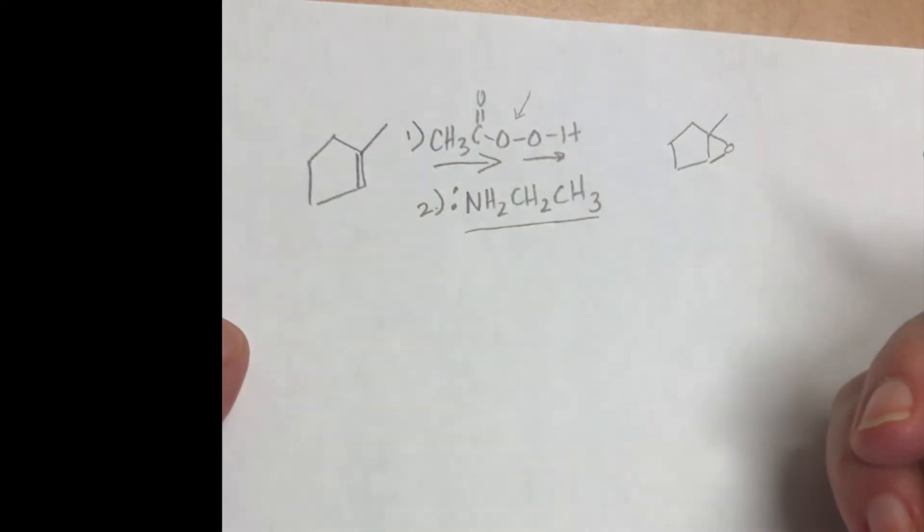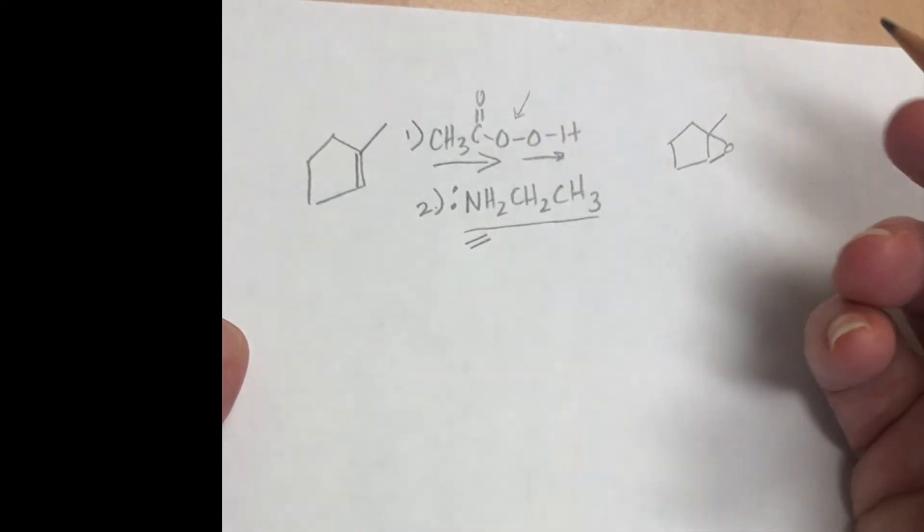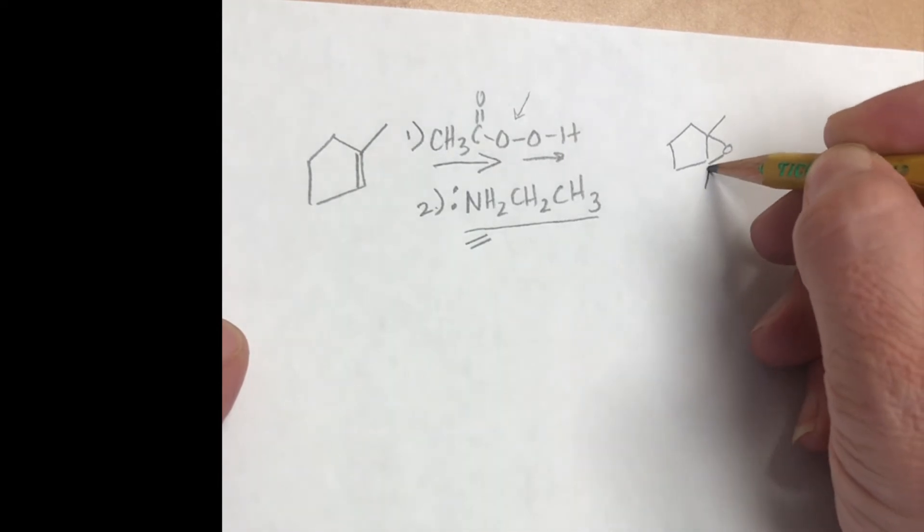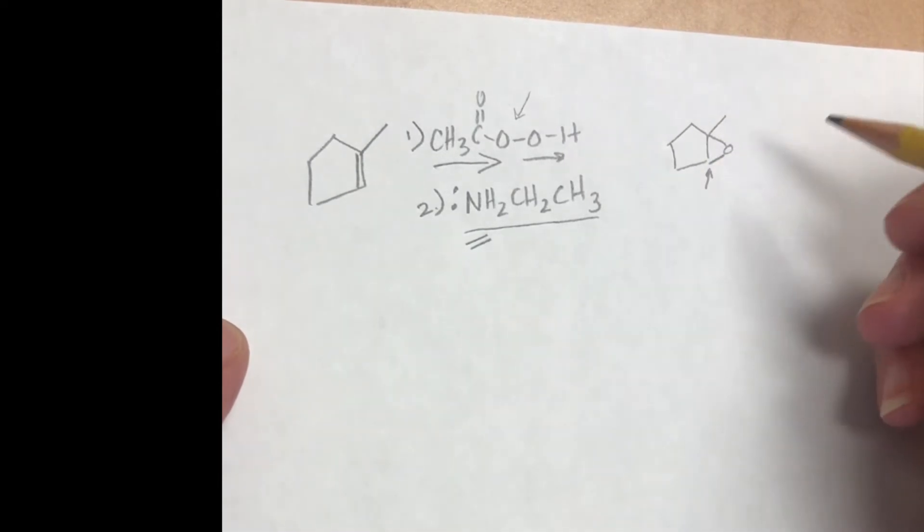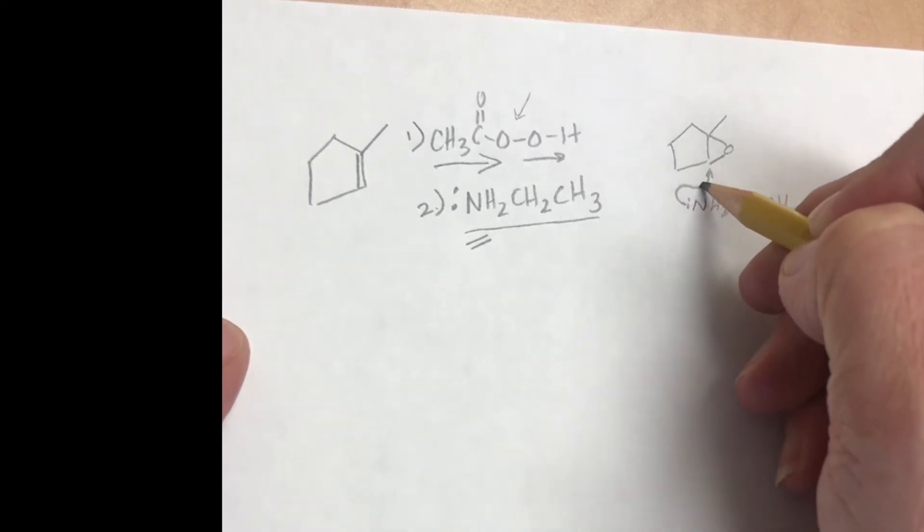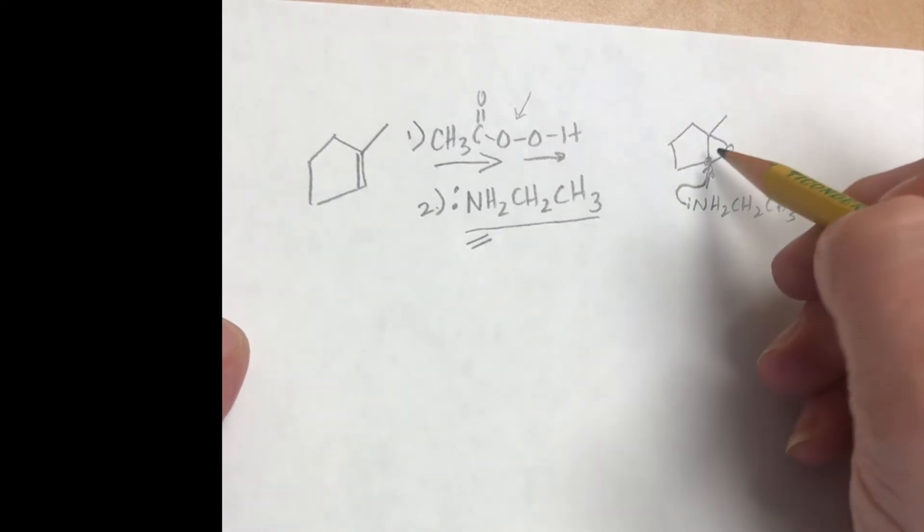Since there is no acid present, we are going to think about this as being a basic condition and so that nitrogen nucleophile is going to attack the less hindered carbon. If we watch that attack, we can see the nucleophile attacks the carbon that is less hindered, this one right here with less carbons around.